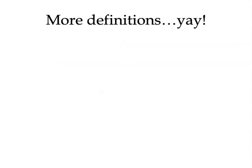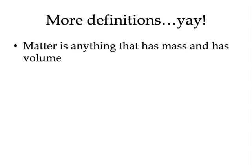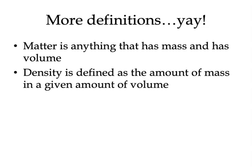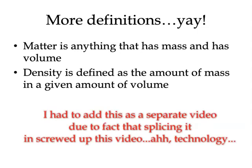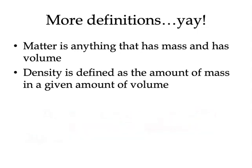To start off with a couple of key vocabulary words: matter is defined as anything that has mass and also has volume. You're going to hear me refer quite often to this idea of density. You've probably heard about density before — it's defined as the amount of mass in a given amount of volume. In the demo example, there will be different items of matter that occupy the same volume but have vastly different masses.